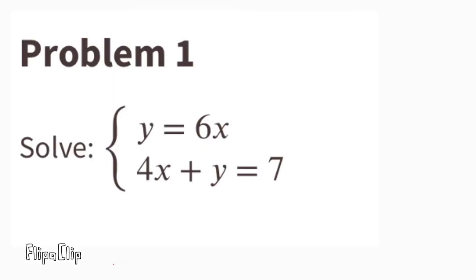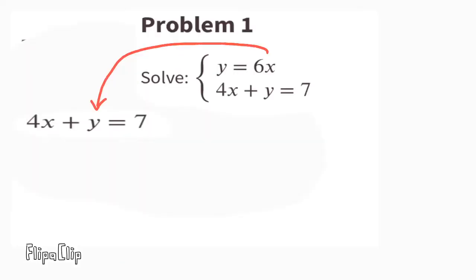It tells you that y equals 6x, so you can substitute this y with 6x. Now the equation reads 4x plus 6x equals 7. Now we can combine like terms: 4x plus 6x equals 10x.